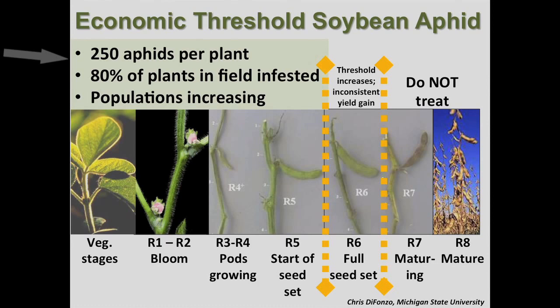This has a built-in window to arrange for a foliar insecticide treatment — it's about one week long. With a high market value, we recommend that you cut that interval in half: three to four days.